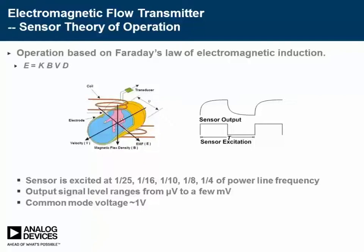Mathematically, we can state Faraday's law as E = K × B × L × V, where V is the velocity of the conductive fluid, B is the magnetic field strength, L is the spacing between the pickup electrodes, E is the voltage measured across the electrodes, and K is a constant. Since B, L, and K are either fixed or can be calibrated, the equation reduces to E being proportional to V. Most electromagnetic flow meters use a low-frequency DC rectangle waveform to excite the sensor coil.